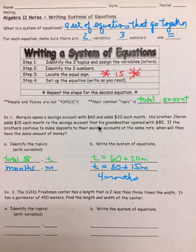For our second one, the SVHS freshman center has a length that is 2 less than 3 times the width. It has a perimeter of 450 meters. Find the length and width of the center. So, our two topics are length, L, and width, W.